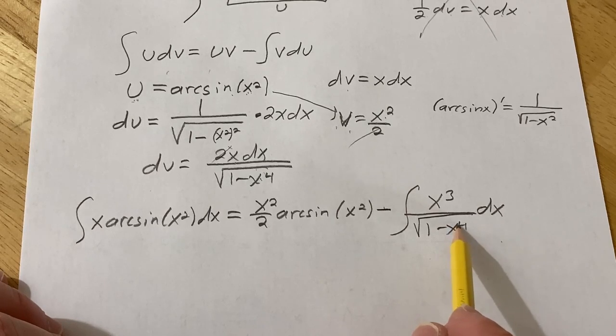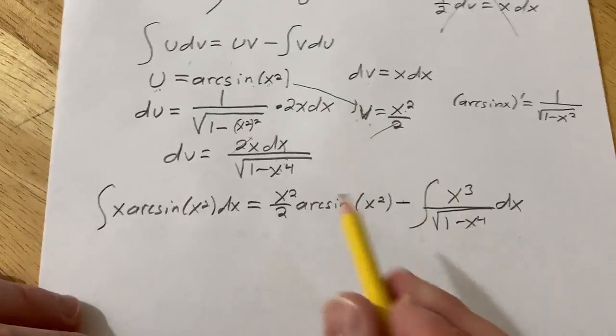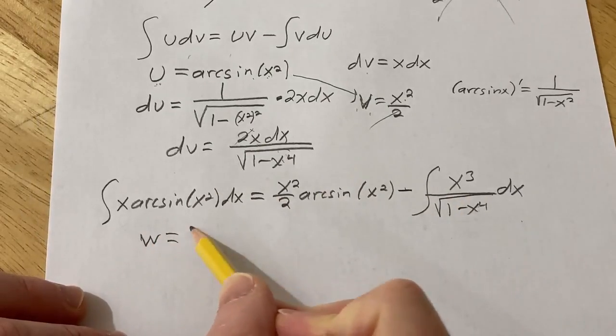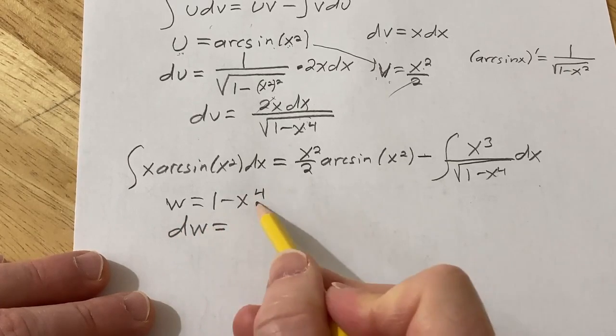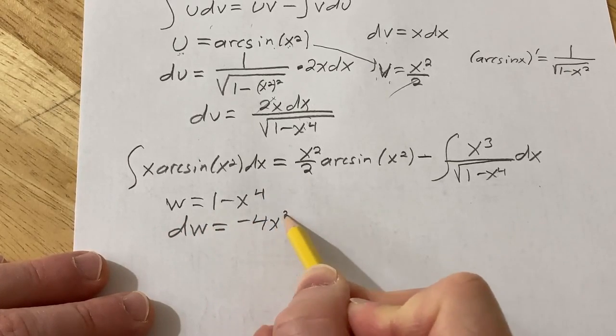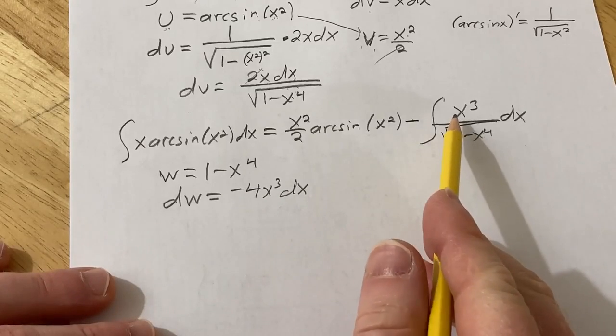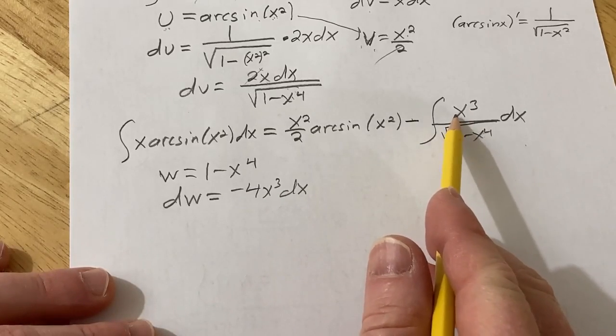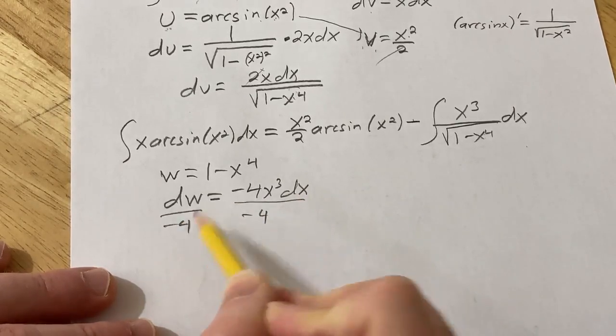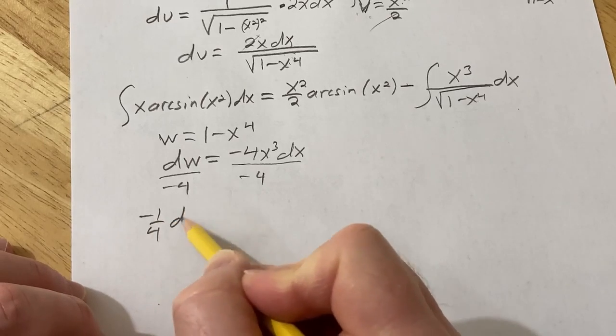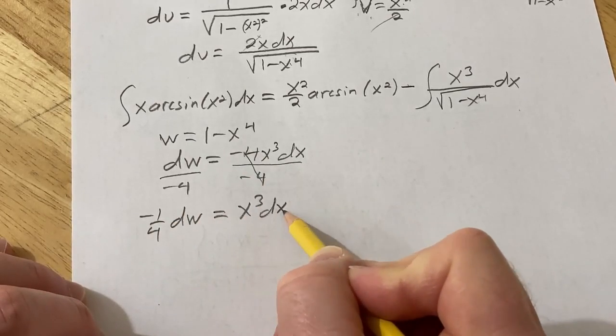So to do that, we're going to make another substitution. I've already used u, so I'm going to use w. So I'm going to let w be equal to 1 minus x to the fourth. So dw will be negative 4x cubed dx. And now we don't have a negative 4 here, so I'm going to get rid of it. I'm just going to divide by the negative 4. So we have negative 1 fourth dw equals x cubed dx.